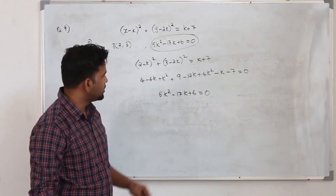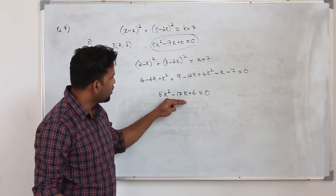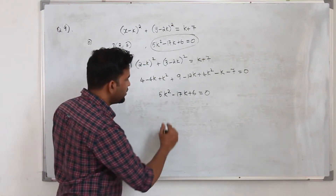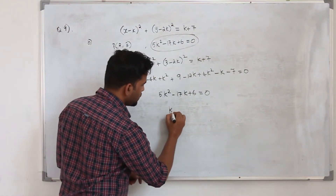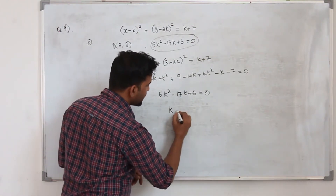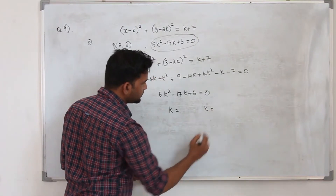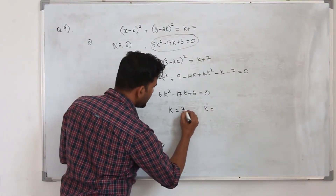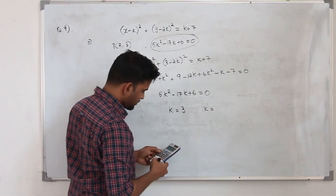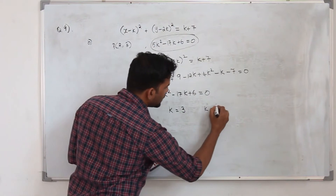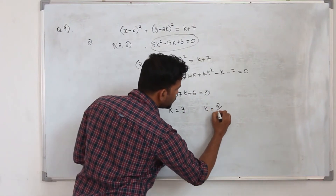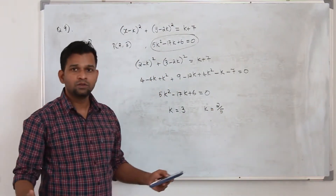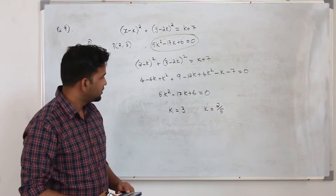Now we need to solve this quadratic equation. We know how to solve it and will get two values of k: k equals 3 and k equals 2 upon 5. That's it — we got two values of k.